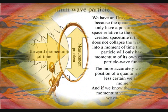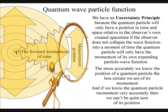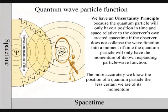In quantum physics we have a problem. It's called the measurement problem. Put very simply, the more accurately we know the position of a quantum particle, the less certain we are of its momentum. And if we know its momentum very accurately, then we can't be quite sure of its position.